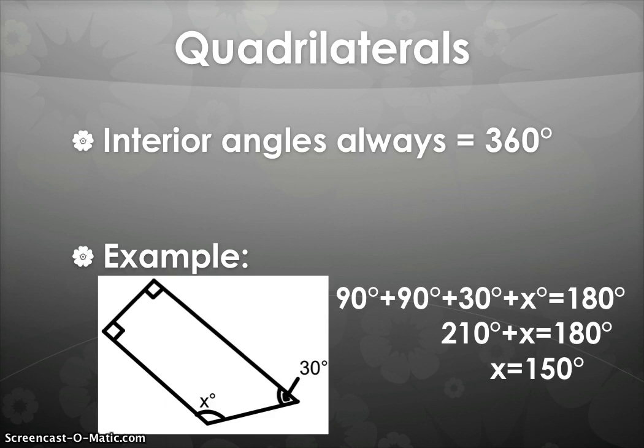Now for quadrilaterals. I am going to test you on this example also as soon as I'm lecturing. The interior angles of a quadrilateral always equal 360 degrees. For example, 90 degrees plus 90 degrees plus 30 degrees plus x equals how many degrees? It's not 180. 180 is triangle, so this is what I want you to be careful of. I do not want this to happen to you on the test, so just be very careful. You set it up the same way where 90 plus 90 plus 30 plus x equals 360, and then you solve for x.